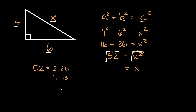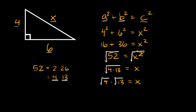You always want to use a perfect square factor if possible, because it's going to simplify your math. So in this case let's use 4 and 13, because specifically 4 is a perfect square. So the square root of 52 we can break down as the square root of 4 times 13. We can split this into the square root of 4 times the square root of 13, and that's equal to x. The square root of 4 is simply equal to 2, so we get 2 root 13 is equal to x — that's the length of the hypotenuse.